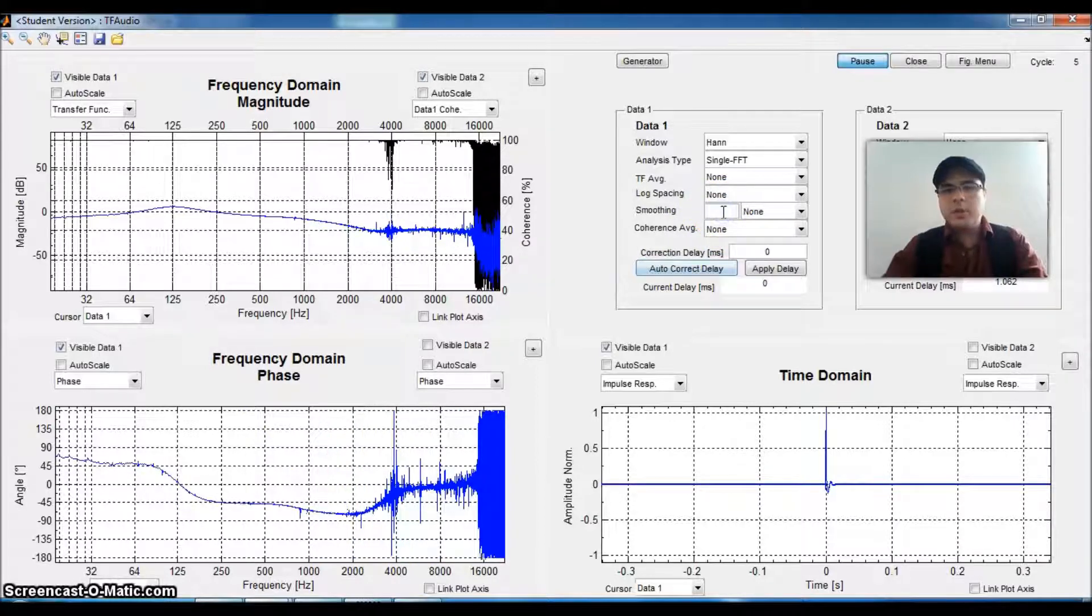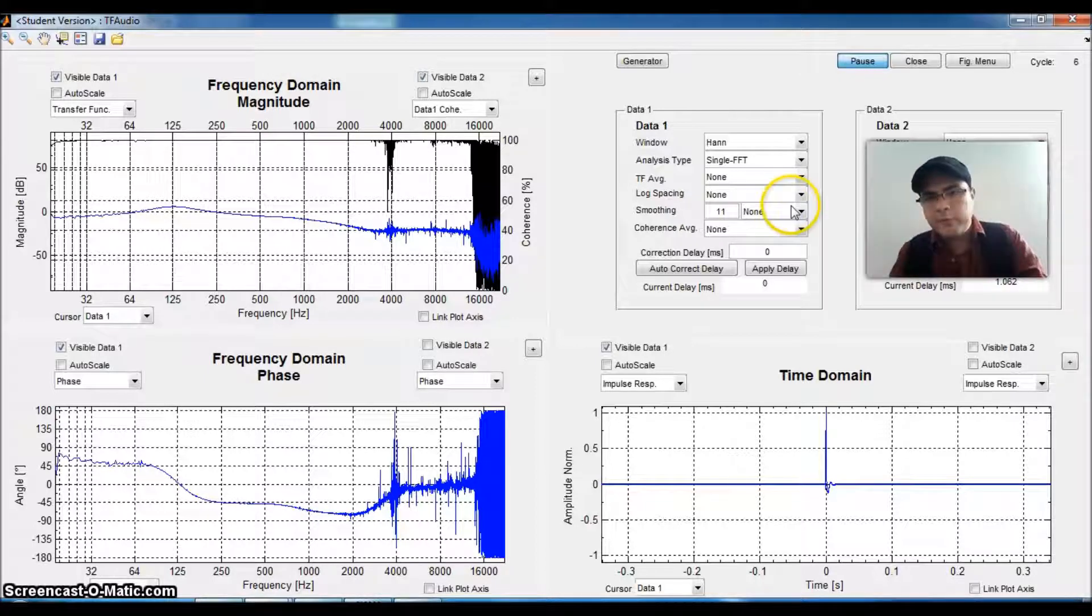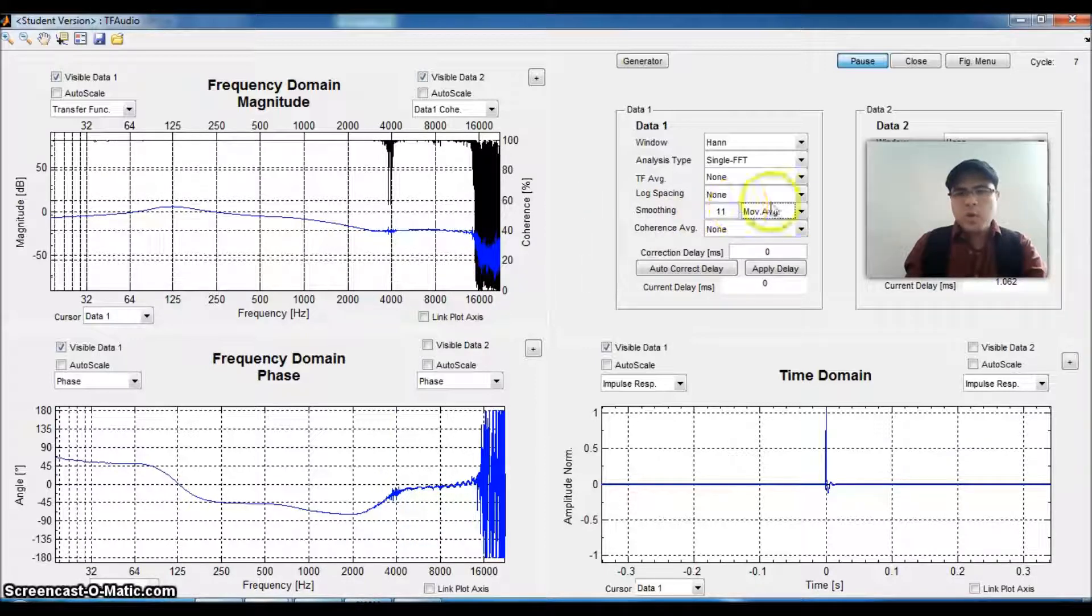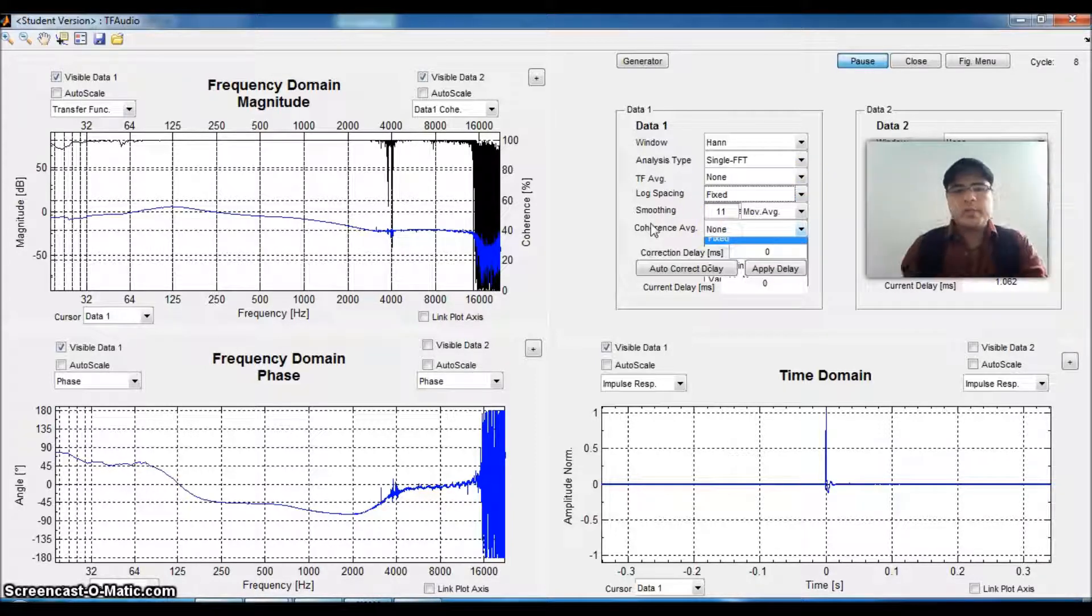I will also set a moving average filter with 11 samples, and I will set the display of the analyzer to show us 48 points per octave.